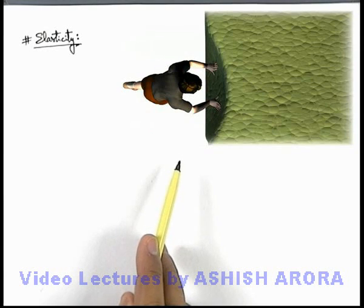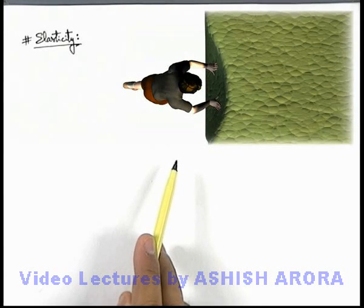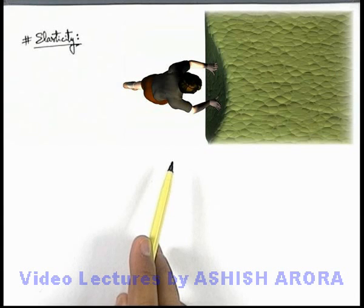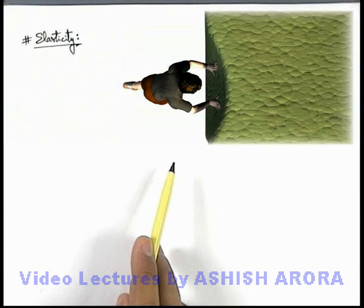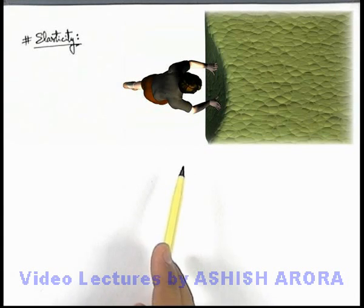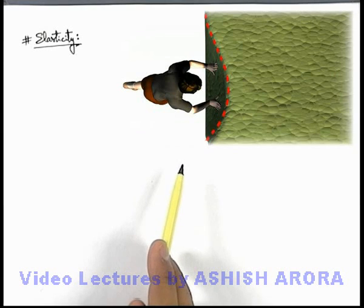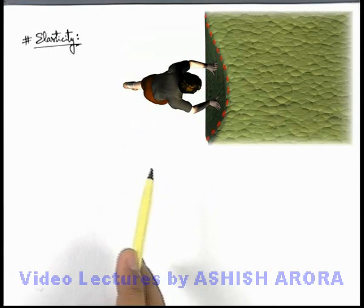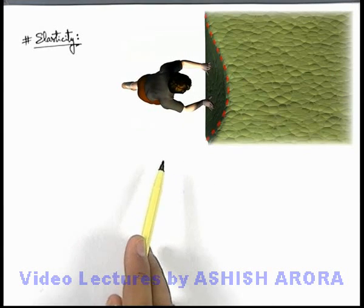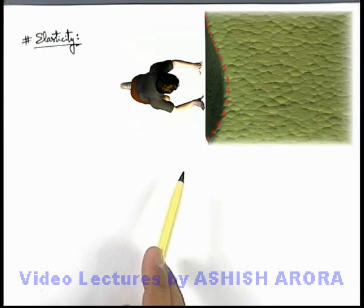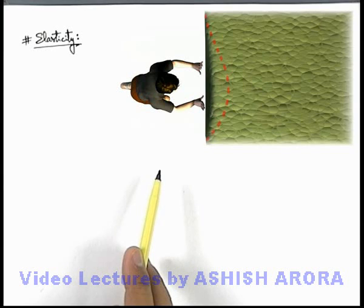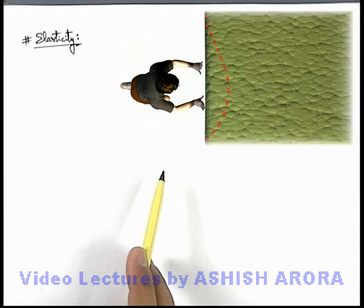Just like the situation in case of a spring — when we apply a deforming force, the spring gets deformed, or we can say some potential energy is stored in the deformation. And when the boy pulls his hand out, you can see the rubber regains its initial shape.